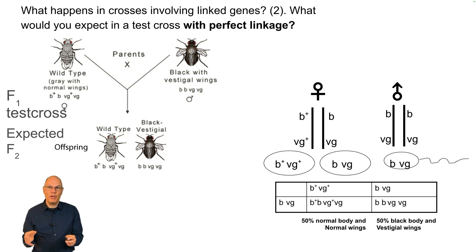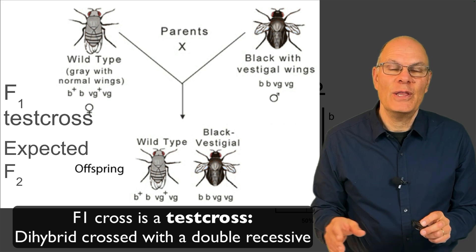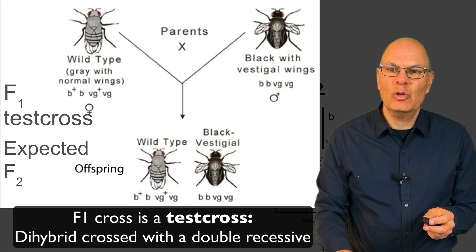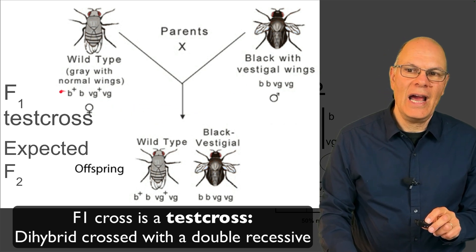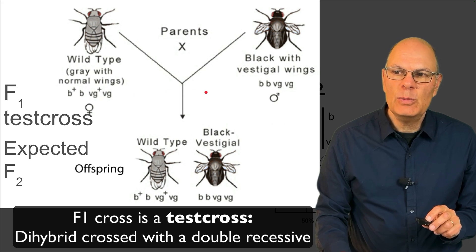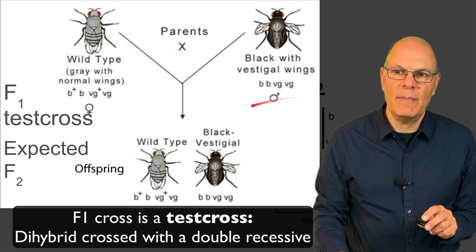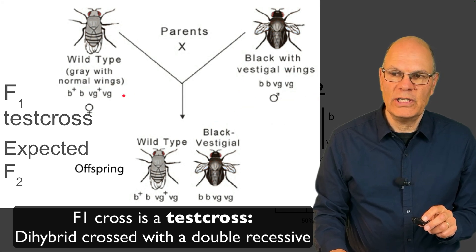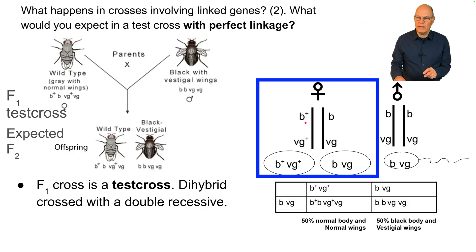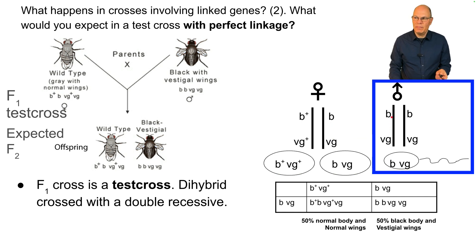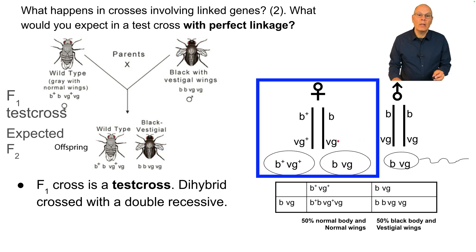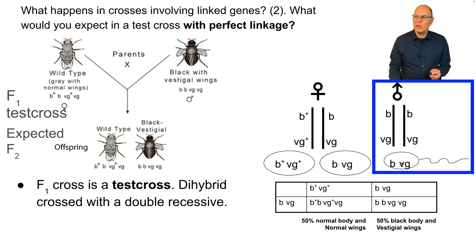What if they were perfectly linked and never separated? The method here is a test cross. A dihybrid — B+, B, VG+, VG — is crossed with a double recessive. The female is the dihybrid and the male is the double recessive. On one of the female's chromosomes she has B+ and VG+; on the other she has B and VG. The male has B and VG on both chromosomes. Assuming perfect linkage, half of the female's gametes have B+, VG+ and half have B, VG. All of the male's sperm have B and VG.